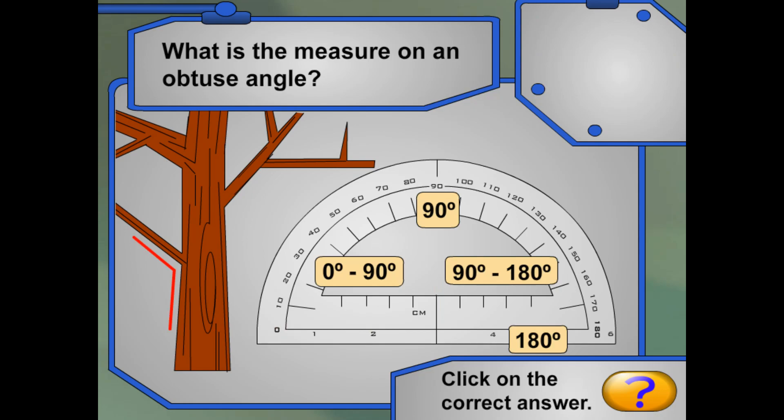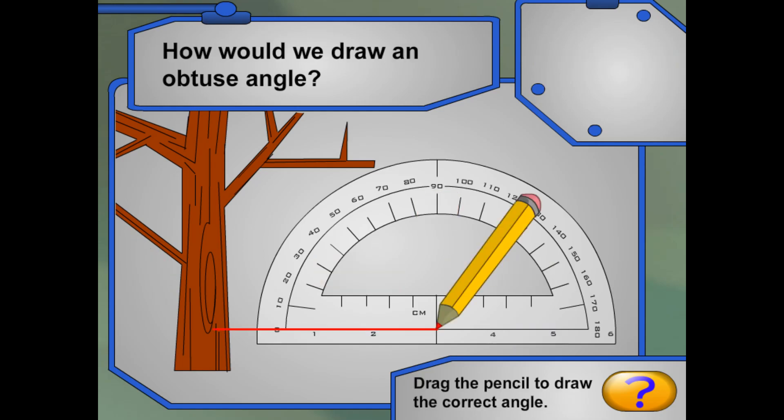Okay! Look at this branch. I think it might be obtuse. But what is the measure for an obtuse angle? Right! An obtuse angle measures between 90 and 180 degrees. Can you draw an obtuse angle for me? Right! An obtuse angle measures between 90 and 180 degrees.